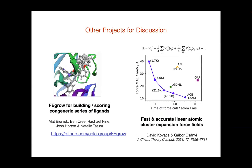If there are any free energy people in the audience, feel free to talk to us about our FEGrow software, which is our little contribution to free energy calculations — it's very useful for setting up a congeneric series of ligands in a binding pocket, using the latest machine learning potentials for optimization. Following on from Dennis's talk this morning: we also work a lot together in Cheng's group on deriving fast, accurate, and linear-scaling force fields from quantum data. We published something last year competitive with ANI in terms of both timings and accuracy, and in the next few months we'll have a transferable version of this force field that is smooth, differentiable, and so forth.